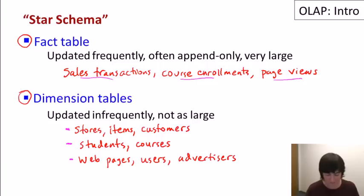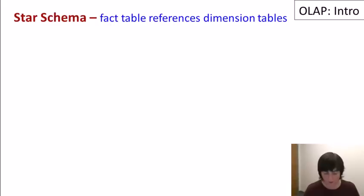You can sort of think of dimension tables as things in the real world. And then fact tables as logging things that happened. It's not always divided this way, but it's not a bad approximation. Now you might be wondering, why is it called a star schema? And it's called that because we have the fact tables sort of centrally referencing dimension tables around it.